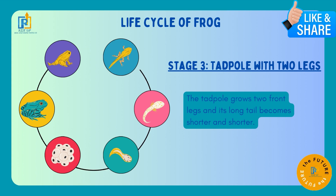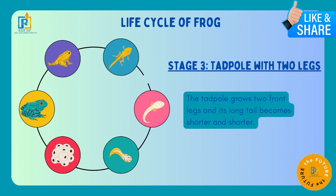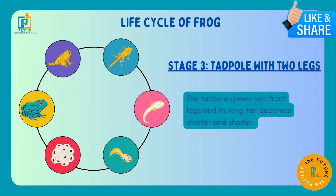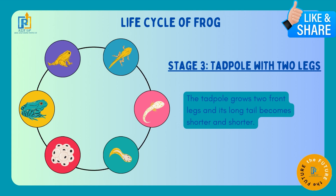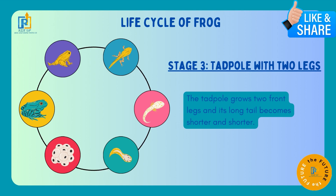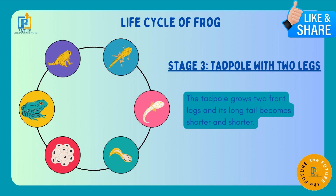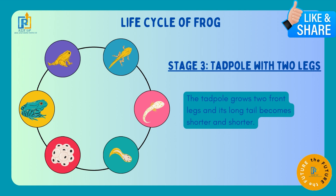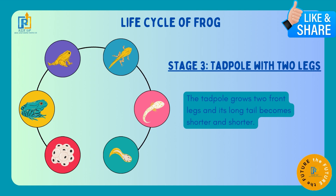Jaise hum is picture mein dekh sakte hain, third wali picture mein woh thoda size mein bada ho jata hai. Aage se uski shape abhi bhi thoda si egg ki tarha ki hi hai, lekin peechhe se woh thoda sa short ho gaya hai — comparatively second wali stage ke. Uski jo tail hai woh thodi si short ho gayi hai, aur aage se dho tangi nikal aati hain.